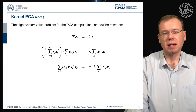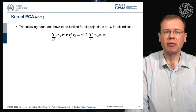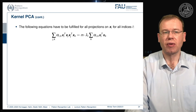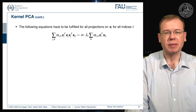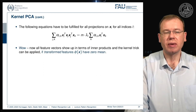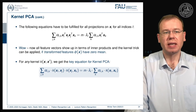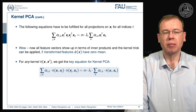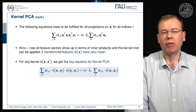Now if we have some additional feature vector x_l and we multiply transpose from the left hand side, we get the following equation. If we look at this, everything in terms of feature vectors turns out to be inner products. The kernel trick can be applied if the transformed features have a zero mean. For any kernel, we then get the key equation for the kernel PCA: it is the sum of the product of the kernels, equal to the sum of the alphas times the kernel.